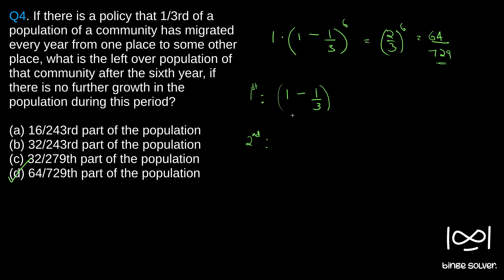Now what happens in second year? This is the new population. I'm going to write this as 2 by 3. I'll show you why. So in the second year, this population further gets reduced by 1/3.